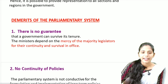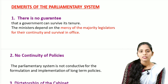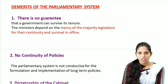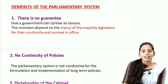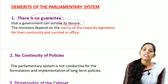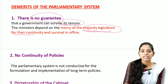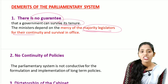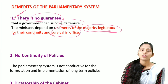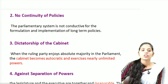Now let us see the demerits of this parliamentary system. The first important demerit is there is no guarantee that the government can survive its tenure. If a no-confidence motion is passed or if the majority is lost, the government loses power. There is no guarantee the government can survive until its tenure is completed, as ministers depend upon maintaining legislative majority for their continuity.